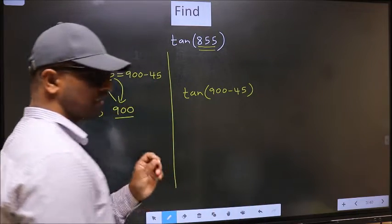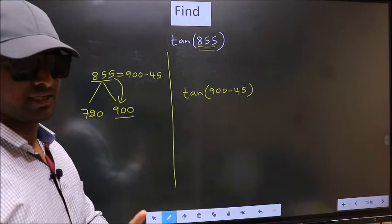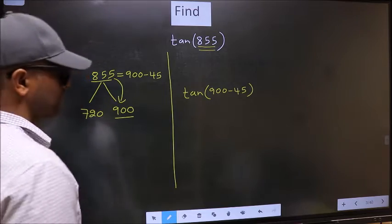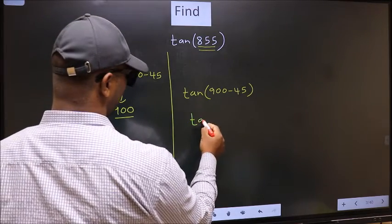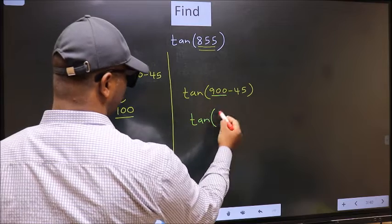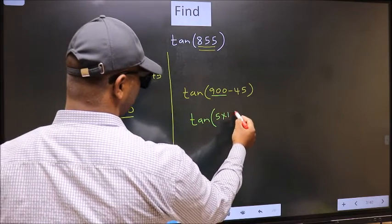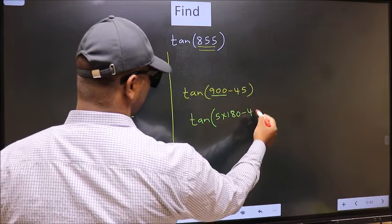This is your step 1. Next, tan, in place of 900 now we should write 5 x 180 minus 45. Next, here we have 180.